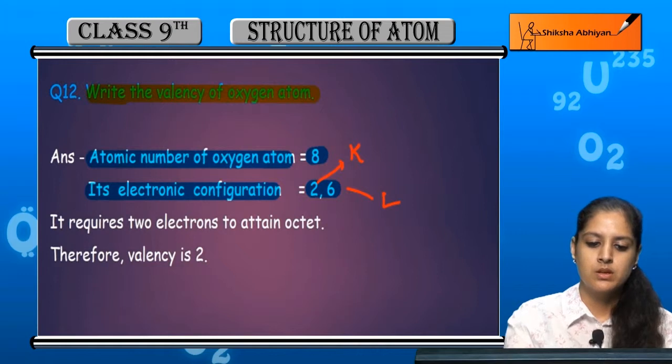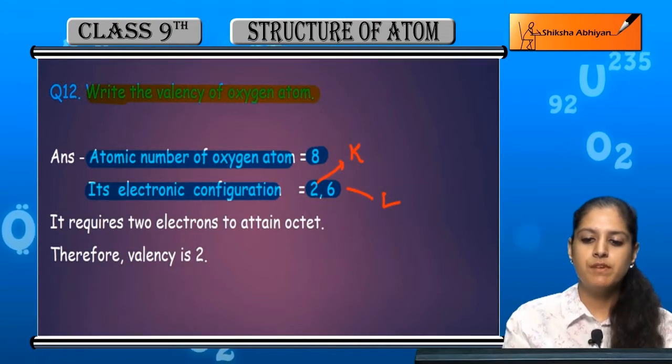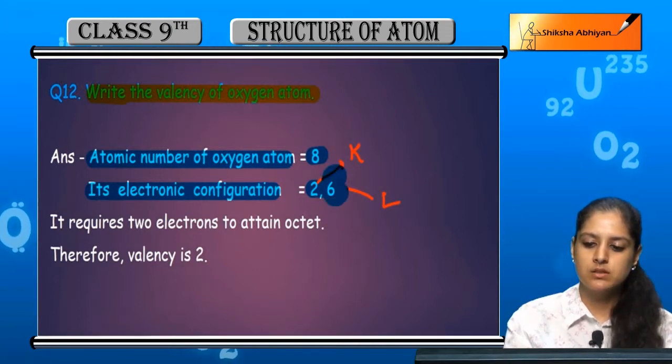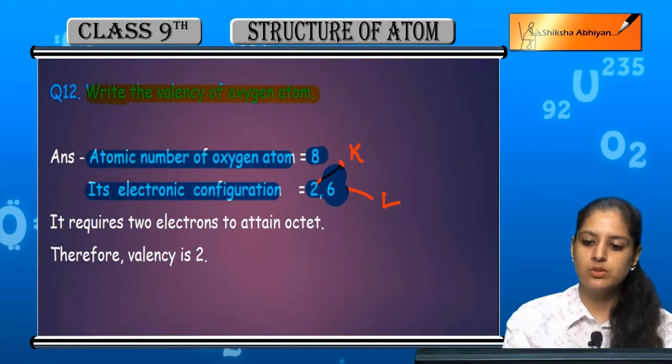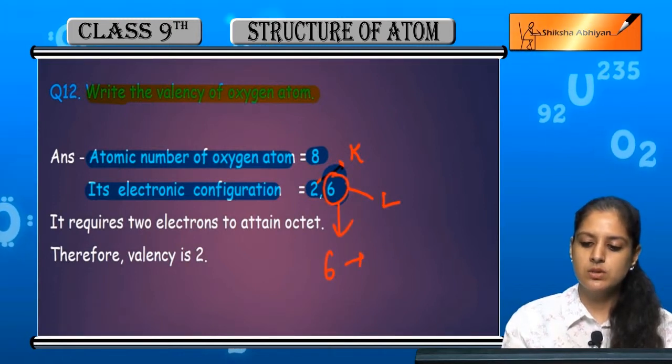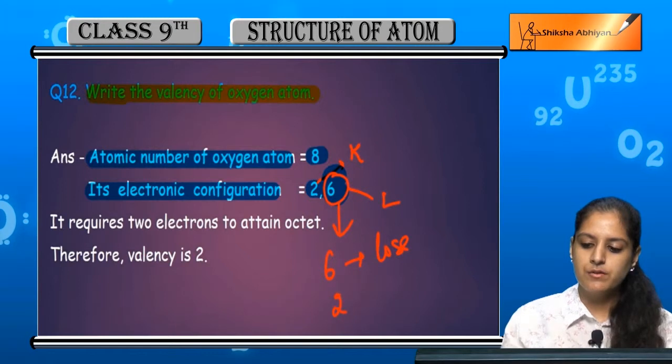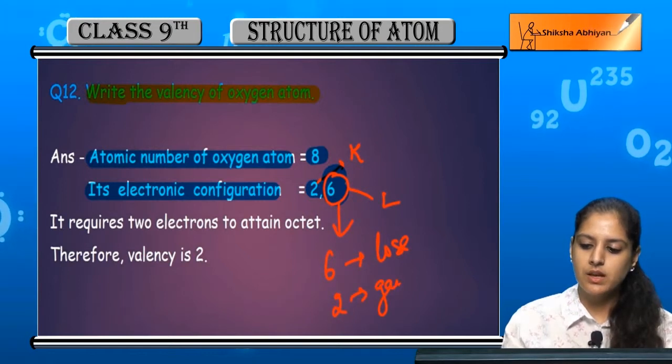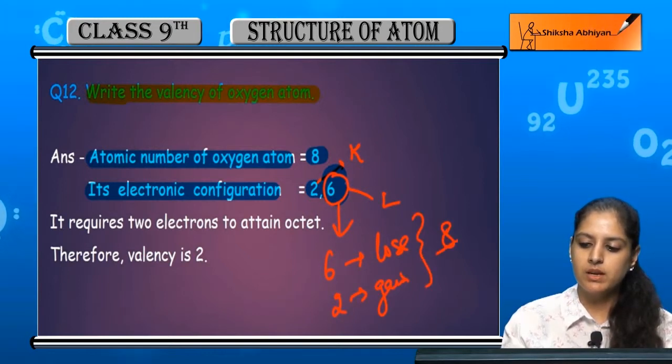Since it has 6 valence electrons, it can either lose 6 electrons or gain 2 electrons to make a total of 8 for the octet.